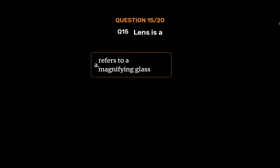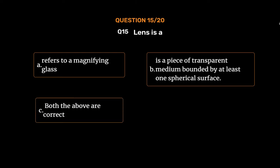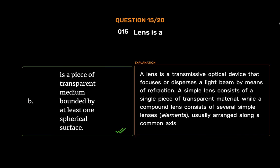Question No. 15: Lenses — Option A: Refers to a magnifying glass, Option B: Is a piece of transparent medium bounded by at least one spherical surface, Option C: Both the above are correct, Option D: None of these. The correct answer is Option B: A piece of transparent medium bounded by at least one spherical surface. A lens is a transmissive optical device that focuses or disperses a light beam by means of refraction. A simple lens consists of a single piece of transparent material, while a compound lens consists of several simple lens elements usually arranged along a common axis.